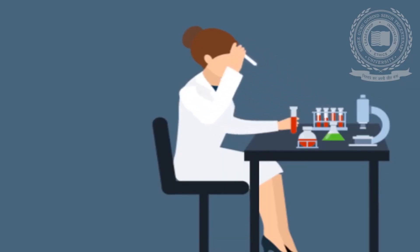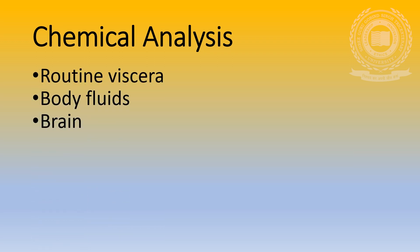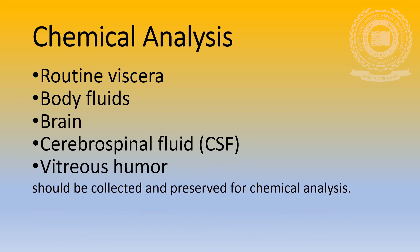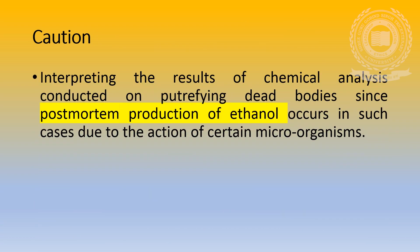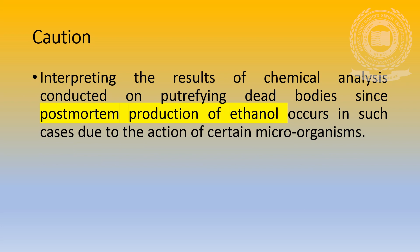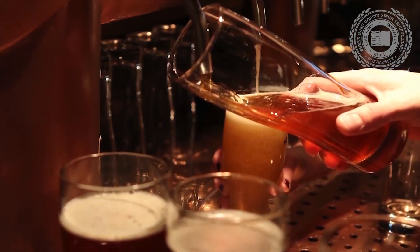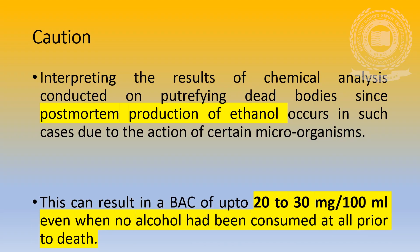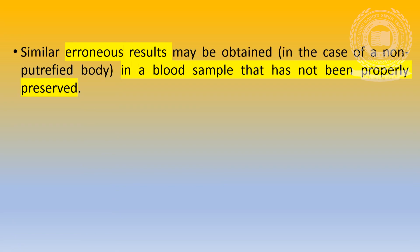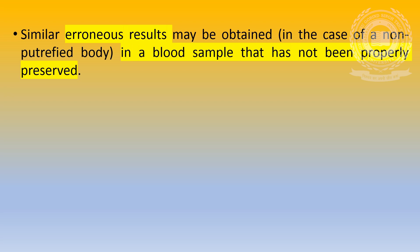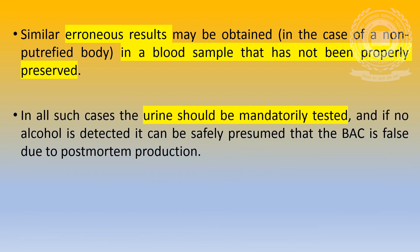Regarding chemical analysis of viscera and body fluid — apart from the routine viscera and body fluid, brain, CSF and vitreous humor should be collected and preserved for chemical analysis. Blood should always be collected from a peripheral vein such as the femoral vein and never directly from the heart. Caution must be exercised in interpreting the results of chemical analysis conducted on putrefying dead bodies, since post-mortem production of ethanol occurs in such cases due to the action of certain microorganisms. This can result in a BAC of up to 20 to 30 mg per 100 ml even when no alcohol had been consumed at all prior to death. Similar erroneous results may be obtained in the case of a non-putrefied body in a blood sample that has not been properly preserved. In all such cases, the urine should be mandatorily tested, and if no alcohol is detected, it can be safely presumed that the BAC is false due to post-mortem production.